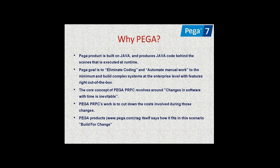Why go with Pega when traditional programming languages exist? Pega is actually a product of Java — the total Pega is designed using Java and in the backend it produces Java code automatically. The main goal of Pega Systems is to eliminate coding and automate manual work, so all options are given in the tool itself.